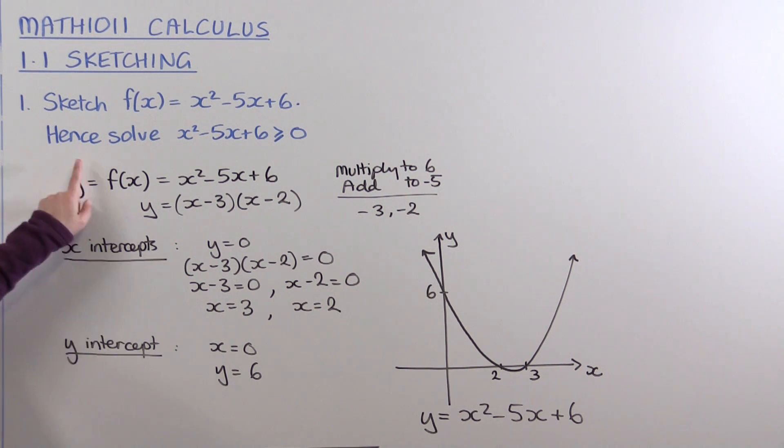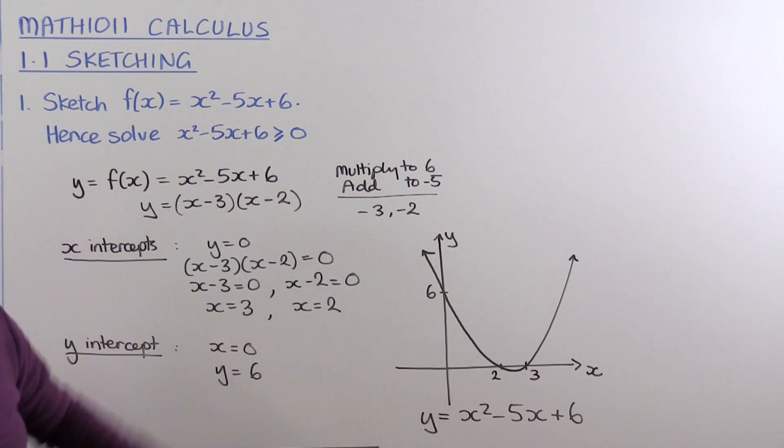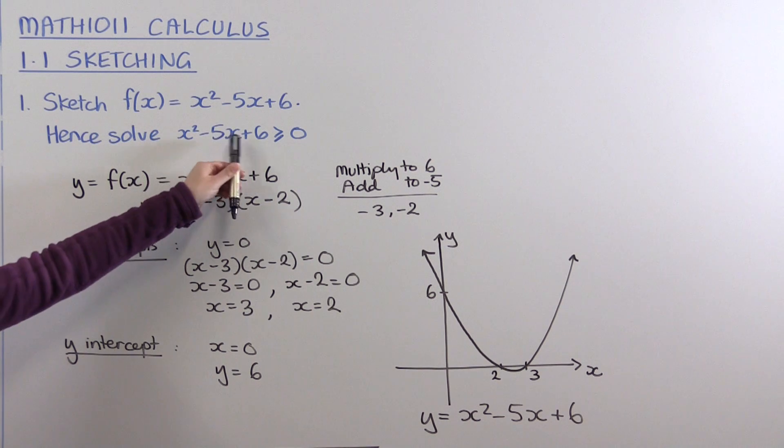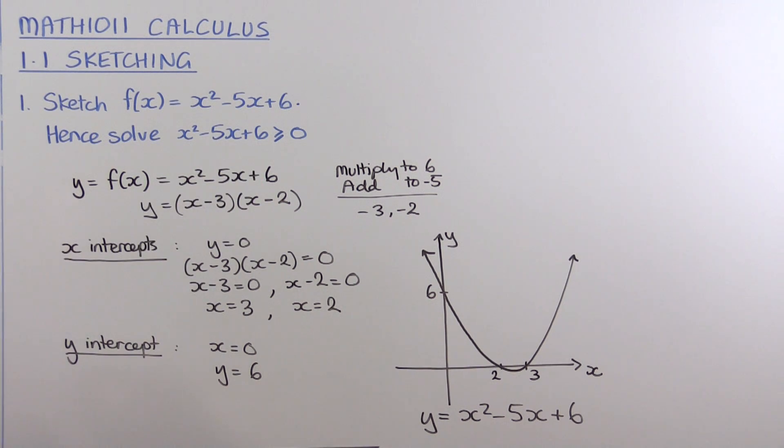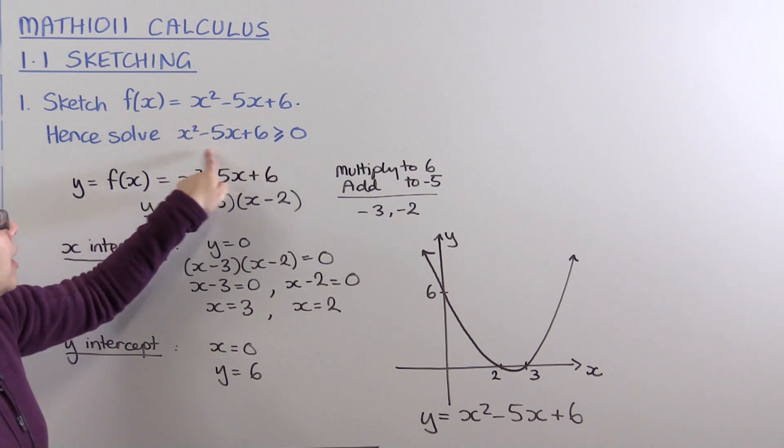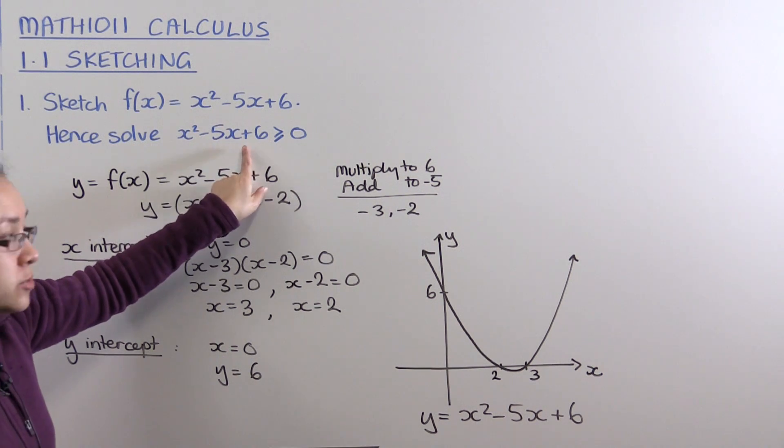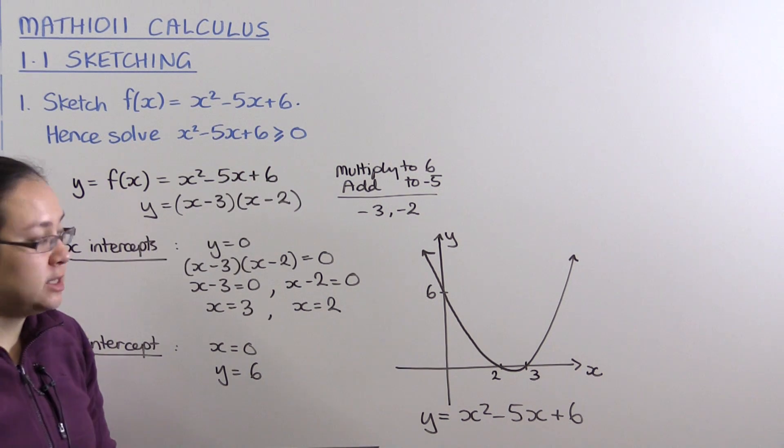Now we're asked to solve this quadratic inequality. We've just sketched y = x² - 5x + 6. So we're asking ourselves: when is the y-value of the graph we just drew greater than or equal to 0?